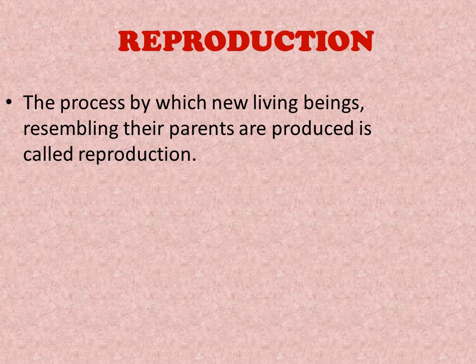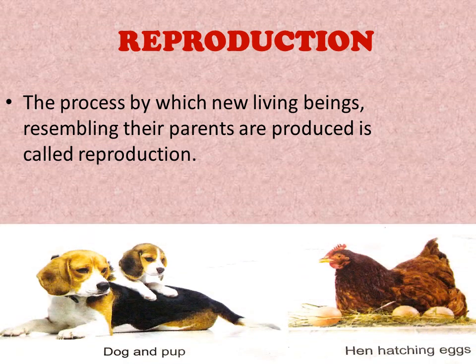Now, in nature, you must have seen reproduction by two methods — one by laying eggs and second by giving birth to the young ones. In the first picture, you can see a dog with its baby, that is the puppy. It resembles the parent. The dog gives birth to the young one.